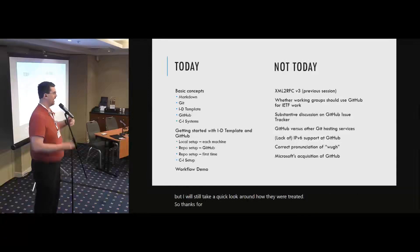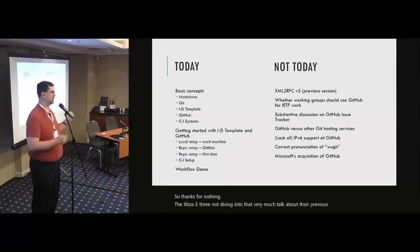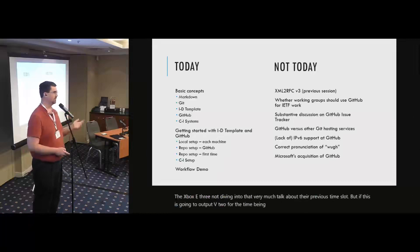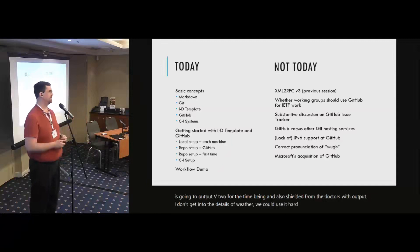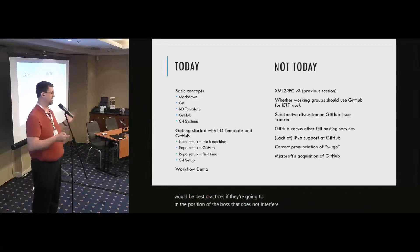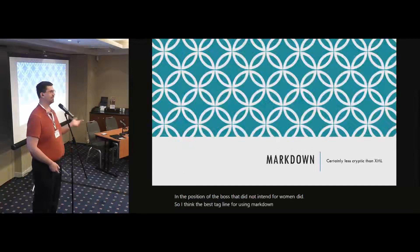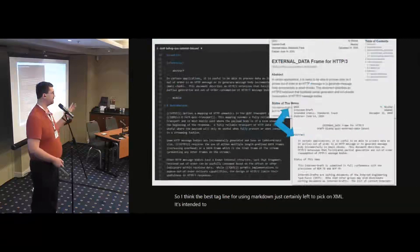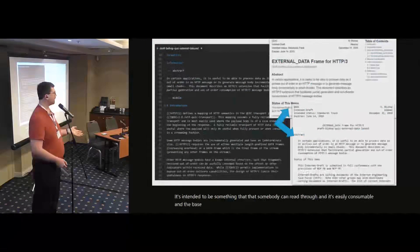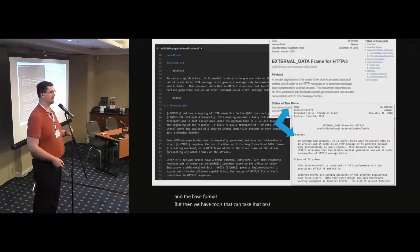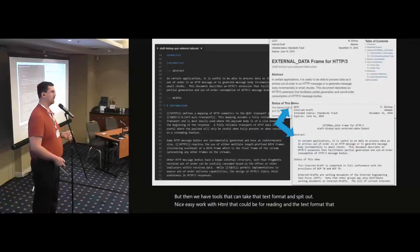Things we're not focusing on: XML RFC v3 — not diving into that very much, there was an excellent talk about that in the previous time slot. Most of this is going to output v2 for the time being, and you're also shielded from the exact version of the output. I don't want to get into the details of whether a working group should use GitHub — there's a working group later this week on the best practices. The best tagline for using Markdown: it is certainly less cryptic than XML. It's intended to be something that somebody can read through and it's easily consumable in the base text format, but tools can take that text format and spit out nice HTML and the text format we all know and perhaps love.